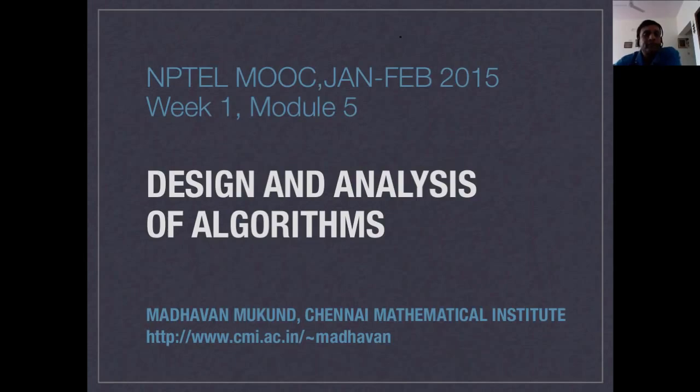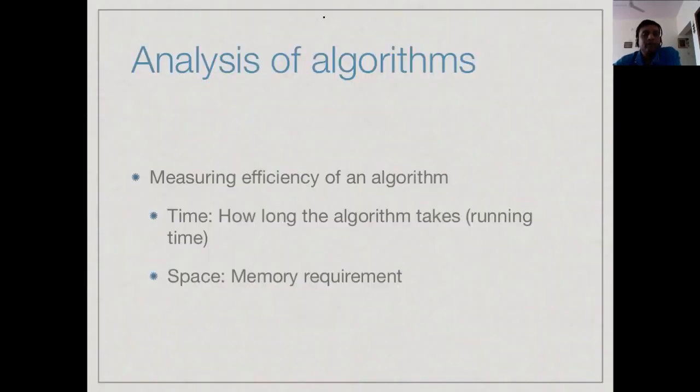Analysis means trying to estimate how efficient an algorithm is. There are two fundamental parameters: time - how long the algorithm takes to execute on given hardware - and space. Remember, an algorithm will be executed as a program written in some programming language and run on some particular machine. When it runs, we have intermediate variables to keep track of, so how much space does it take? How much memory does it require?